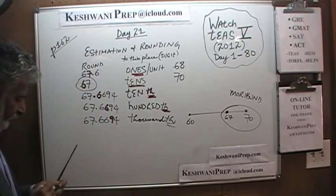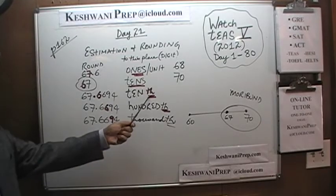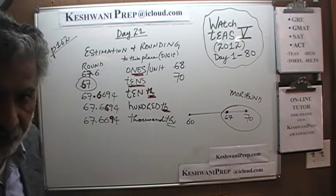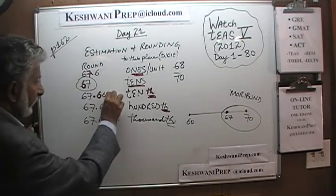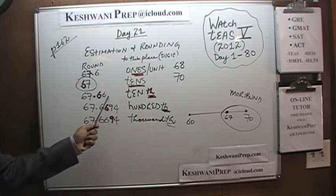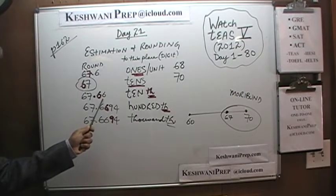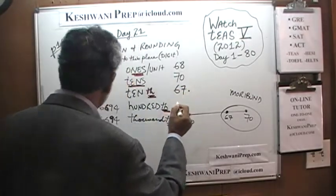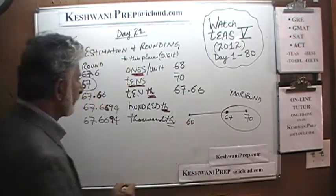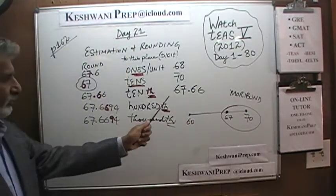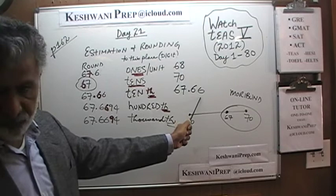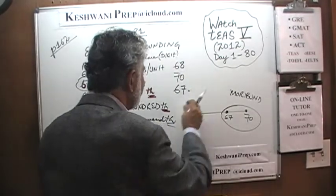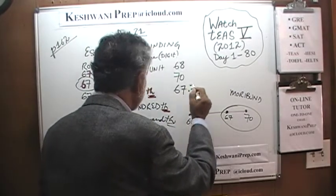Rounding to the nearest tenth: we go as far as the hundredths digit and look at 67.66. The second 6 — the hundredths digit — is 5 or more, so the tenths digit rounds up. 67.6694 rounded to the nearest tenth becomes 67.7.